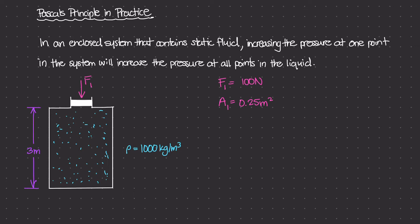So what is the pressure at the very top of this container, or the pressure being applied by this piston? We know the equation for pressure: pressure is just force over area. So Pressure 1 equals Force 1 over Area 1, which is 100 newtons divided by 0.25 meters squared. The resulting pressure is 400 pascals — that is the pressure being applied to this piston at the very top of the container.